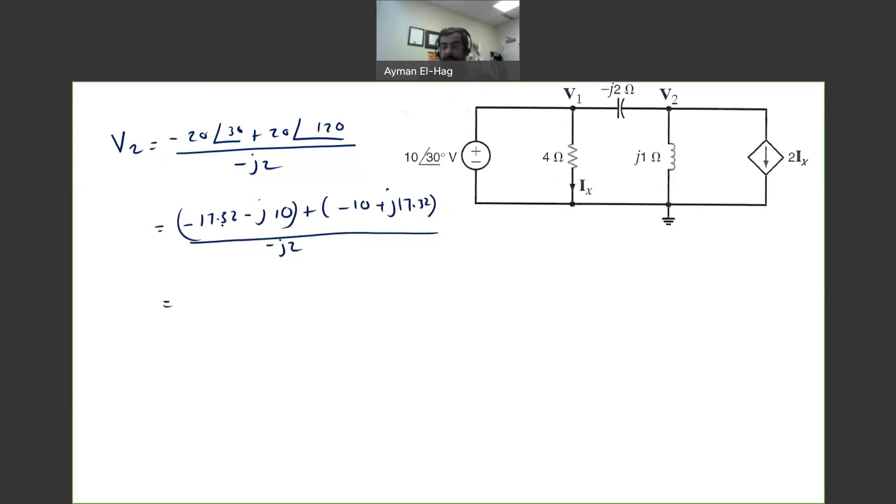So now we add the real with the real, imaginary with the imaginary. This is equal to -27.32 + j7.32 divided by -j2.